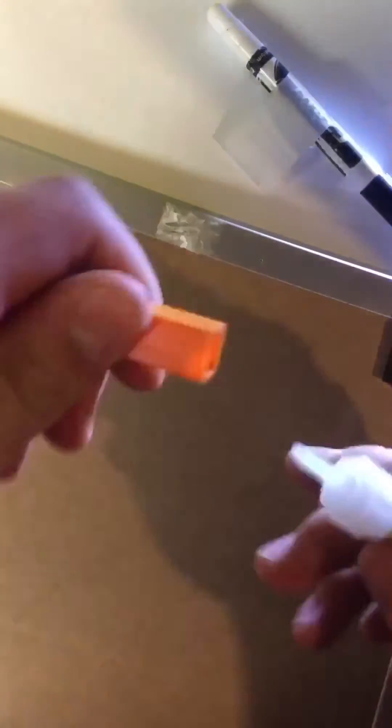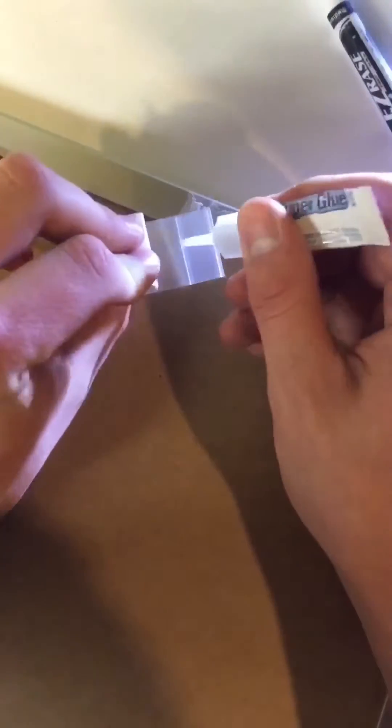So as you can see, I've broken this little plastic thingy off my whiteboard, so I'm going to test out super glue to see if I can glue it back on there.